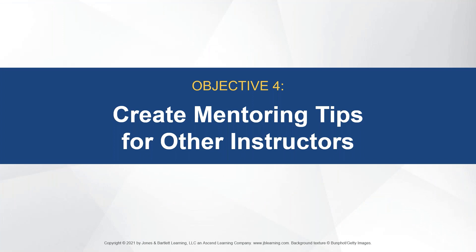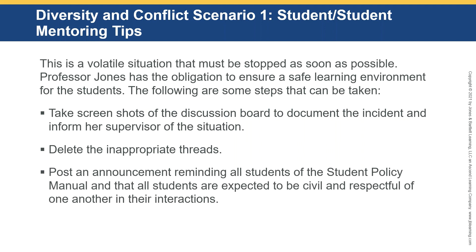Objective four: we give you partial solutions to those scenarios and some mentoring tips. The first scenario — the student-to-student conflict — is a volatile situation that must be stopped as soon as possible. Professor Jones has the obligation to ensure a safe learning environment. Steps to take: take screenshots of the discussion board to document the incident and inform her supervisor immediately. Delete the inappropriate threads — other students don't need to see them. Post an announcement reminding all students of the student policy manual and that all students are expected to be civil and respectful in all their interactions. Most online courses have netiquette policies, and if students are in violation, they need to be reminded.